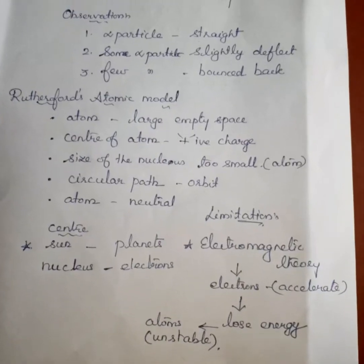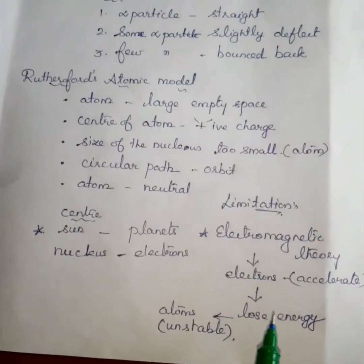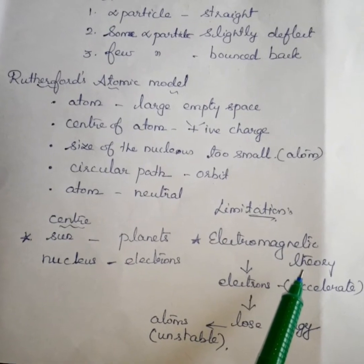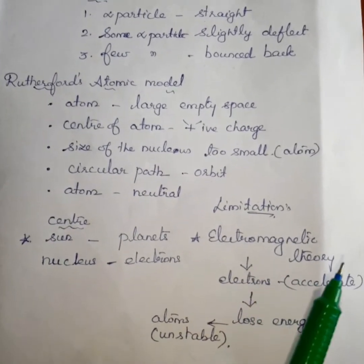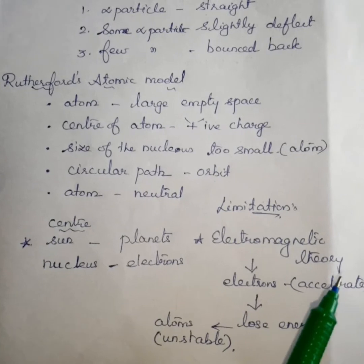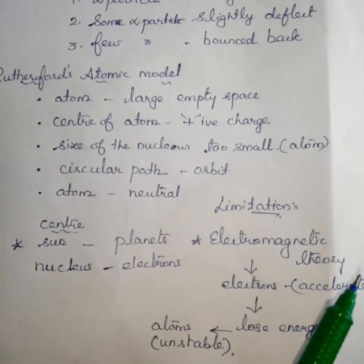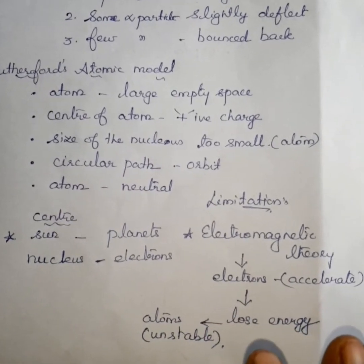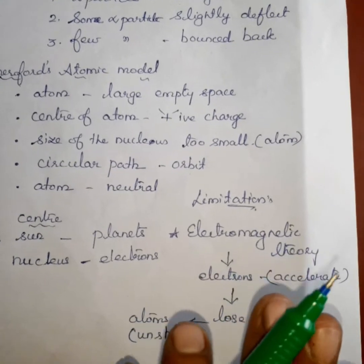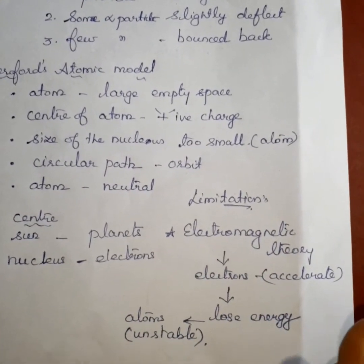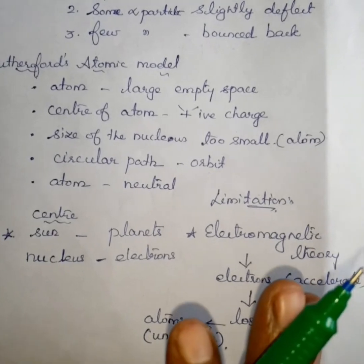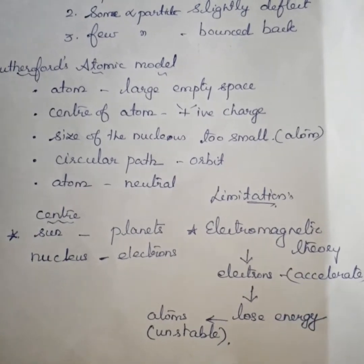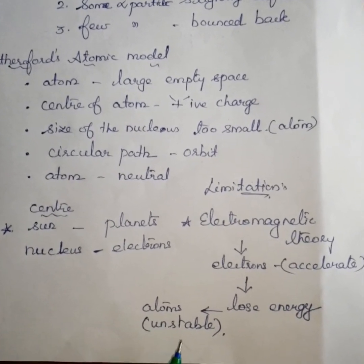Now we are going to study the limitation of the Rutherford model. According to electromagnetic theory, a moving electron continuously accelerates. If the electron is continually oscillating, it loses energy continuously. So if it is continuously moving, it loses energy, the path is reduced, and it would eventually fall into the nucleus. This means the atom would be unstable — but atoms are actually stable.